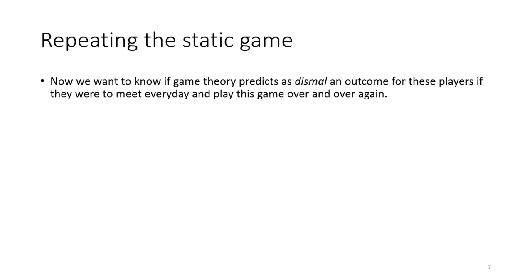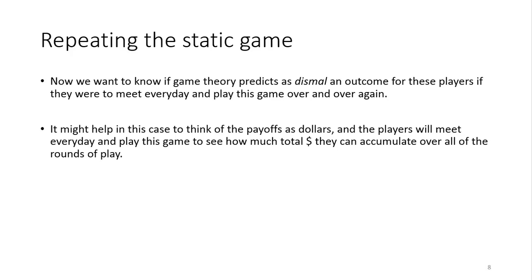We're going to repeat the static game, and we want to know whether game theory predicts as dismal an outcome when players repeat the game. We know in the static game it predicts a breakdown of cooperation — players wind up in that inferior equilibrium rather than the Pareto efficient situation where they could both be better off. Think of the utility values as dollars; your objective is to accumulate as many dollars as you can across all rounds of play.